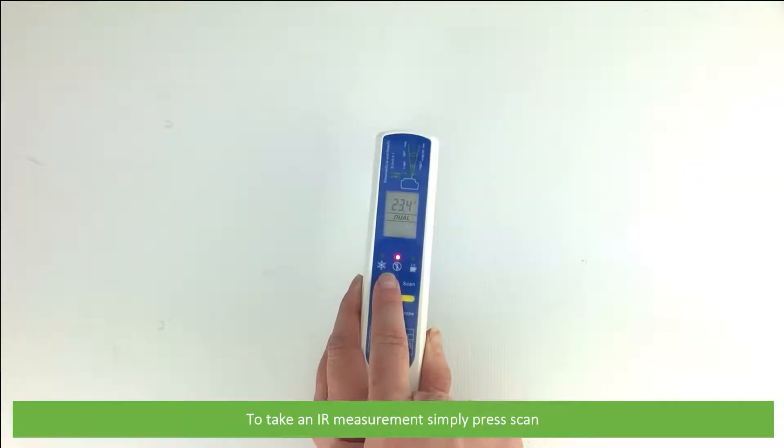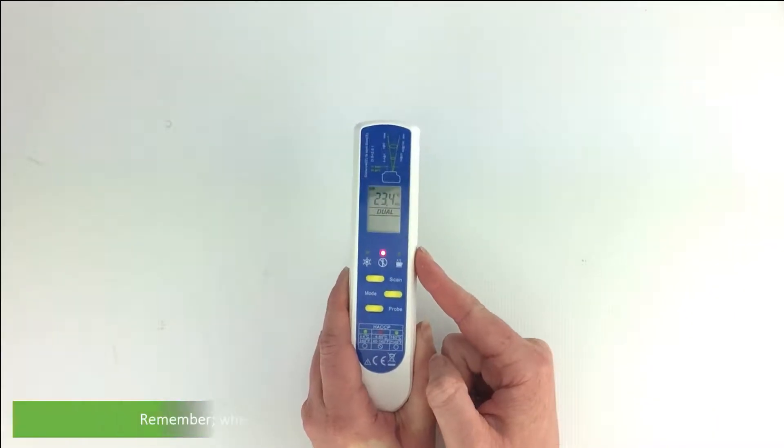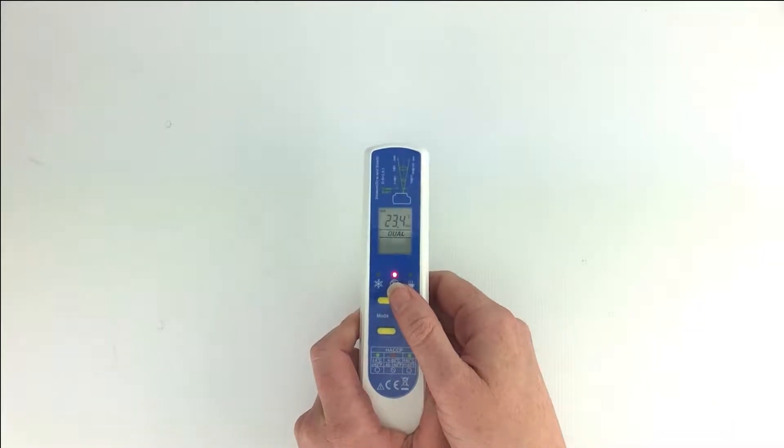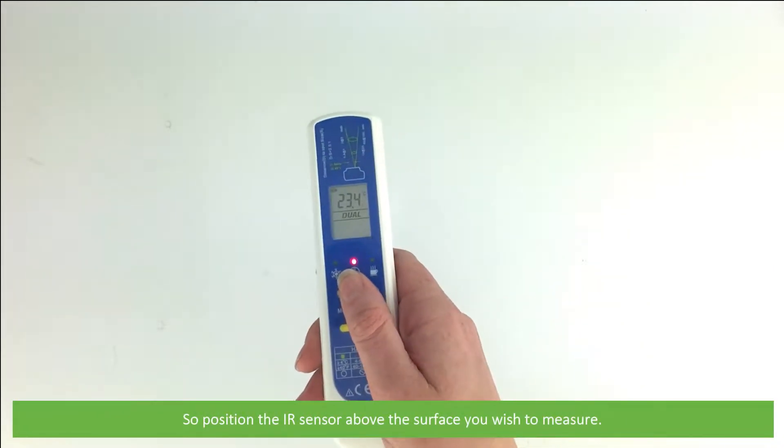To take an IR measurement, simply press scan. Remember, where a lot of devices have the IR lens on top, this is placed below. So position the IR sensor above the surface you wish to measure.